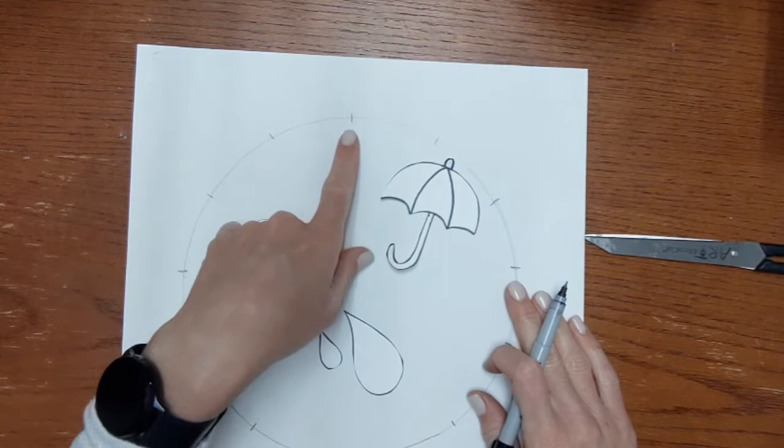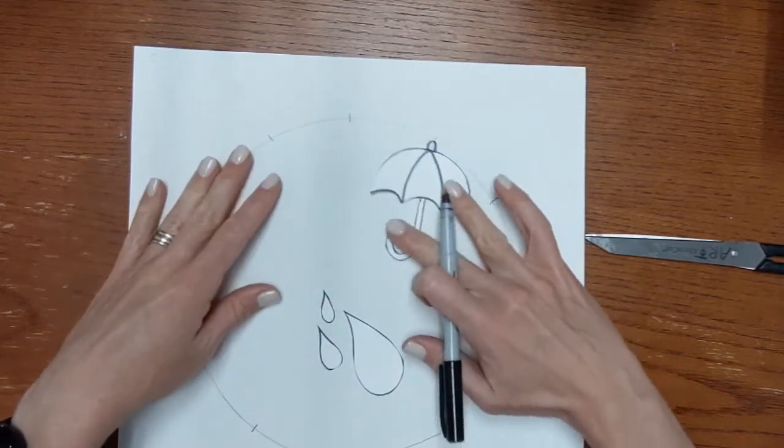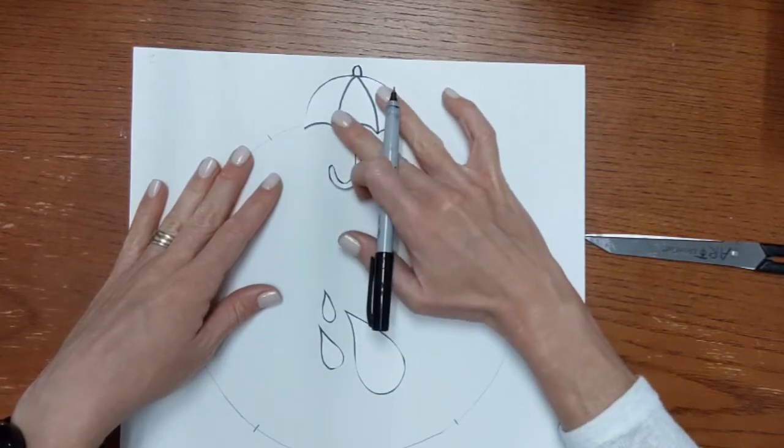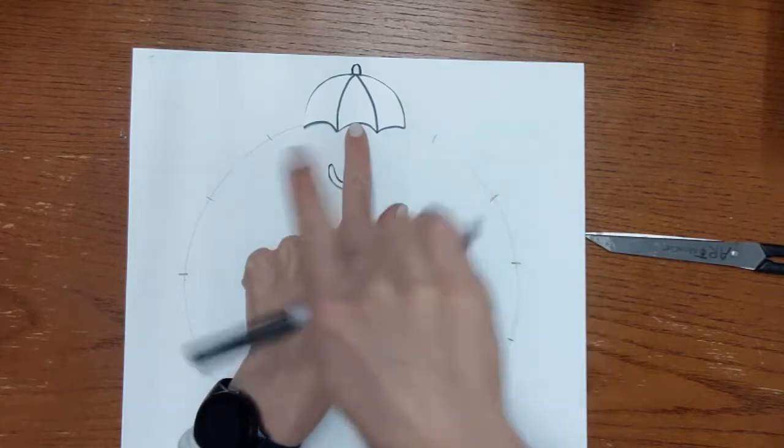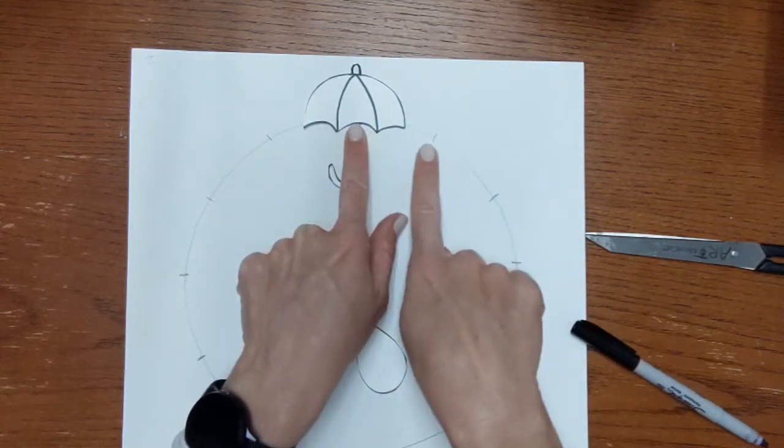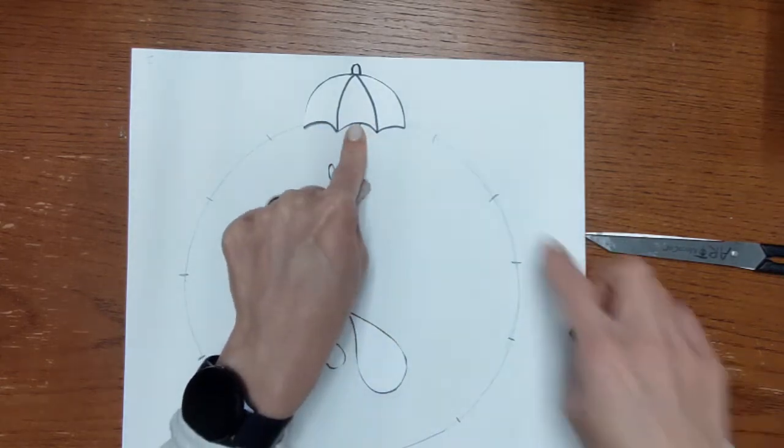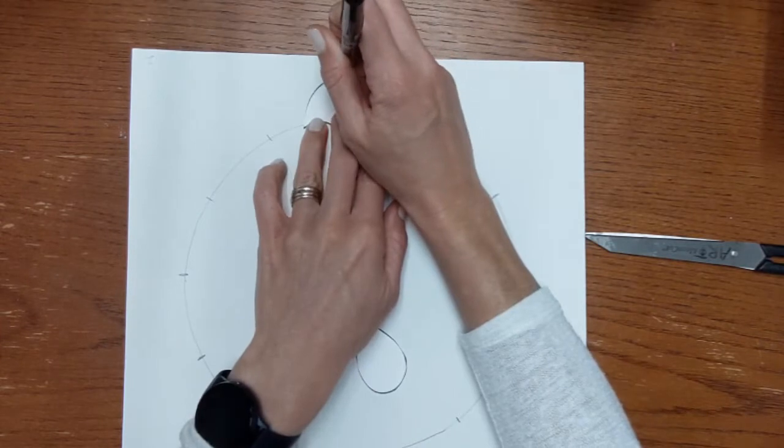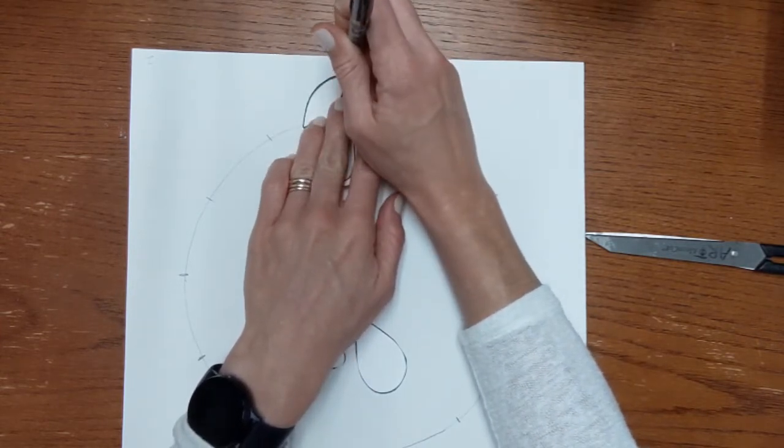I'm going to start up here at my number 12 spot, if it was a regular clock where it would have a number 12 on the clock. And I'm going to line my umbrella up so it's covering that mark and it's about right in the middle of these two marks that are on either side of it, the number one o'clock mark and the number 11 o'clock mark. So I've lined that up and I'm going to use my hands to hold this really still while I trace my umbrella.